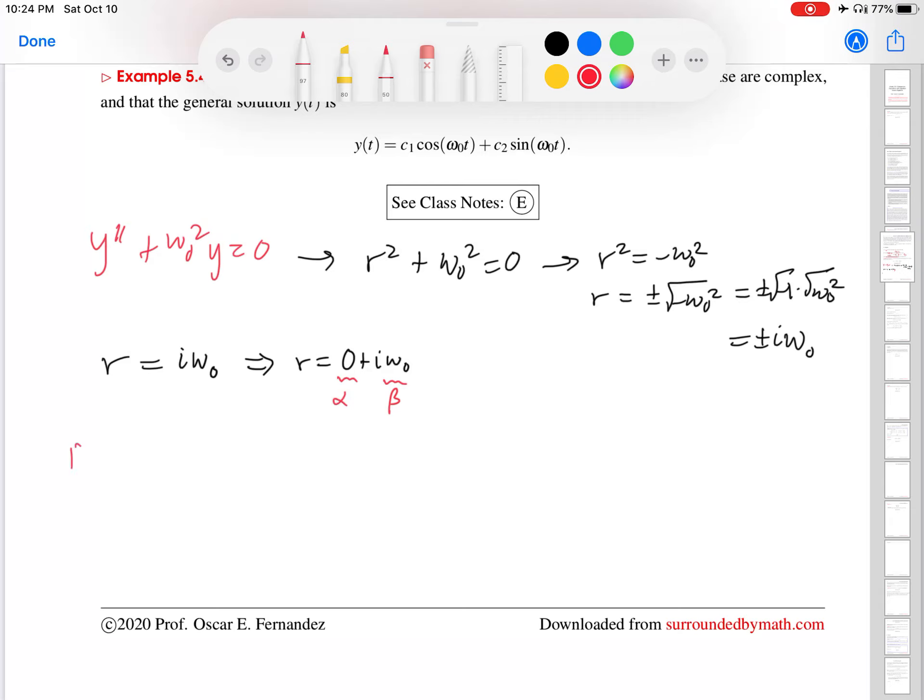So let's write out the two solutions that we get. Remember, the solutions have the form E to the alpha t cosine of beta t and E to the alpha t sine of beta t. All right, E to the zero t, that's just one. So that leaves me with cosine omega naught t. And E to the zero t, again, is one. Leaves me with sine omega naught t.